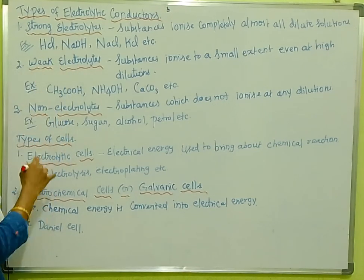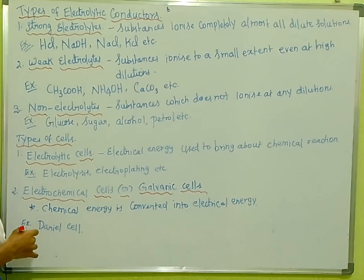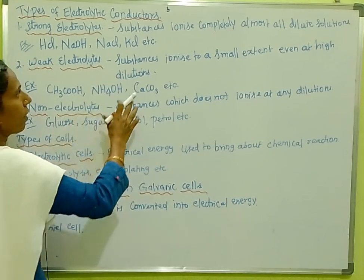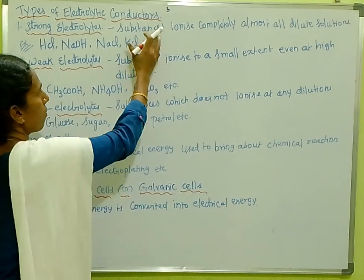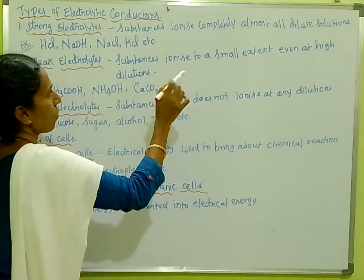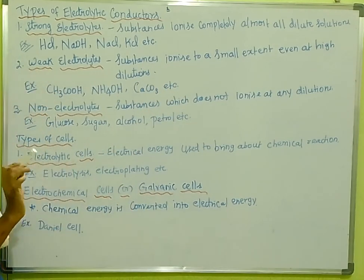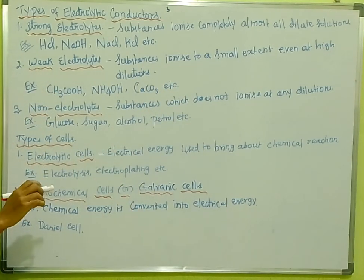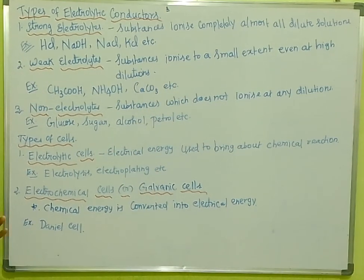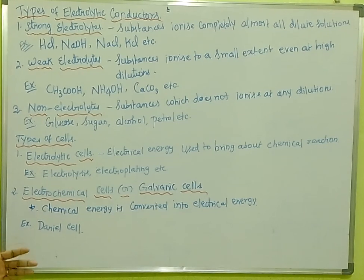What is meant by a strong electrolyte? A strong electrolyte is a substance that is completely ionized in dilute solutions. The substance is completely dissociated — completely ionized in dilute solutions.